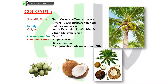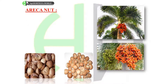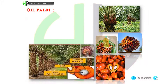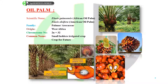Areca nut: scientific name: Areca catechu. Family: Arecaceae. Origin: Malayan Archipelago. Chromosome number: 2n = 32. Common name: Betel nut. Oil palm: scientific name: Elaeis guineensis — African oil palm; Elaeis oleifera — American oil palm. Family: Arecaceae. Origin: West Africa.